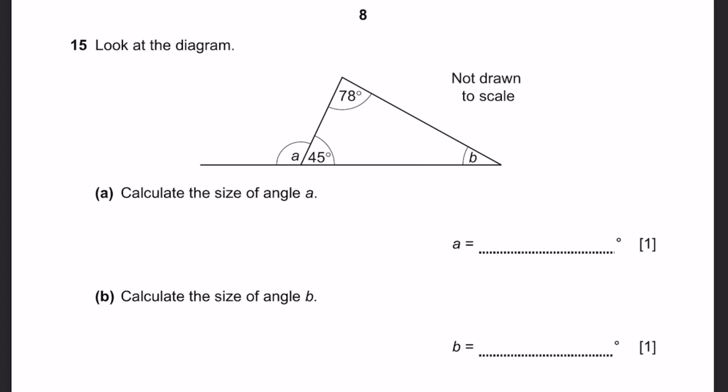Question 15. Look at the diagram. A. Calculate the size of angle A. That's equal to 180 minus 45, which equals 135 degrees. B. Calculate the size of angle B. That will be 180 minus 45 minus 78, which equals 57 degrees. That's the answer.